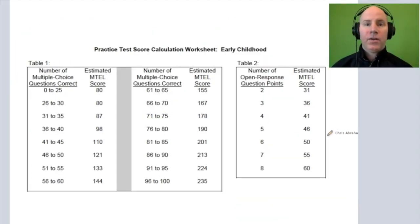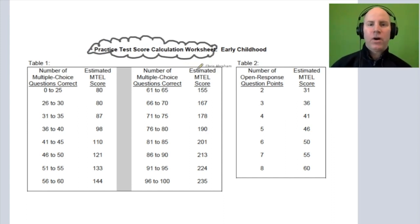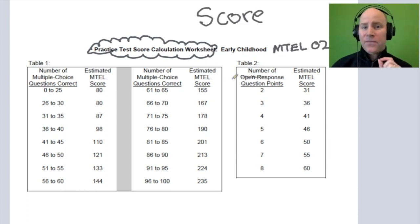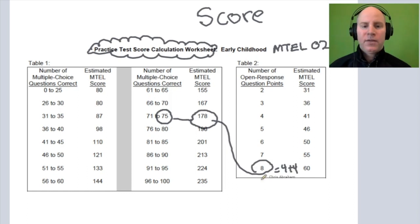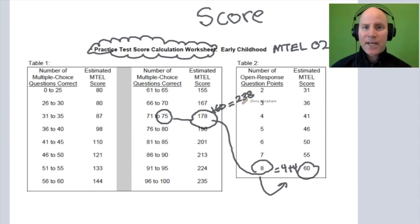I want to point out one more thing regarding the early childhood scores. This is from the practice test and it helps you calculate the score on the early childhood MTEL 02 exam. And there's some very important things I want you to pick up on that are here that are totally not clear. First, if you only answer 75 of the multiple choice questions correct, you only get a total of 178 points. That means even if you get an eight, so an eight means you got two fours on the essays, even if you do perfect on both essays and get two fours, you only get 60 points.